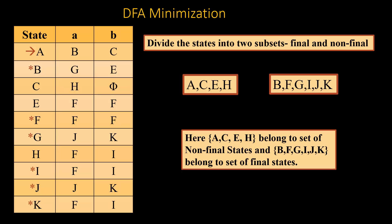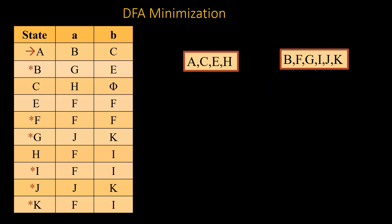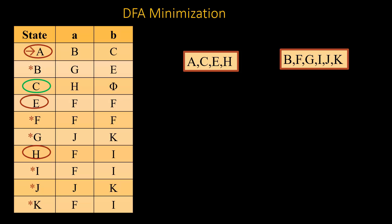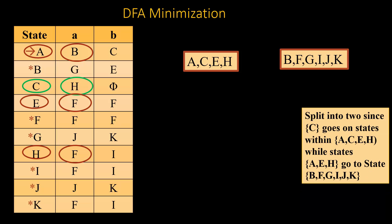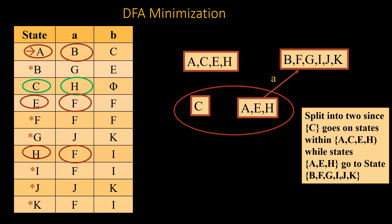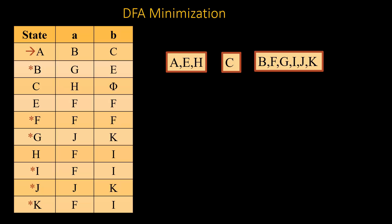We check whether {A, C, E, H} can be merged as a single state. On input A, state C goes to H (which is within this non-final set), whereas all other states go to the set of final states. So we split {A, C, E, H}: C is separated. We then check {A, E, H} on A — they all go to B or F, which is within the final set, so no further split is needed there.